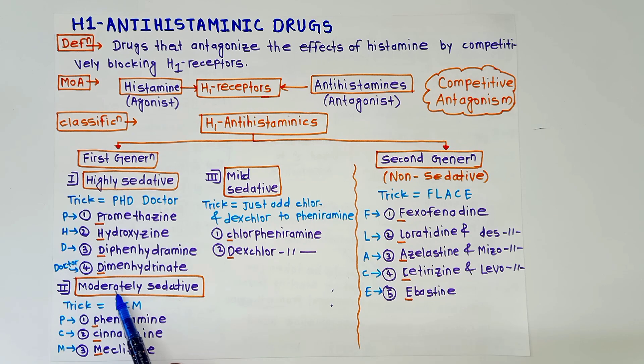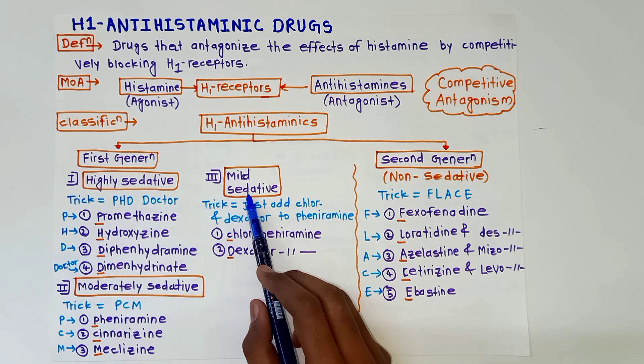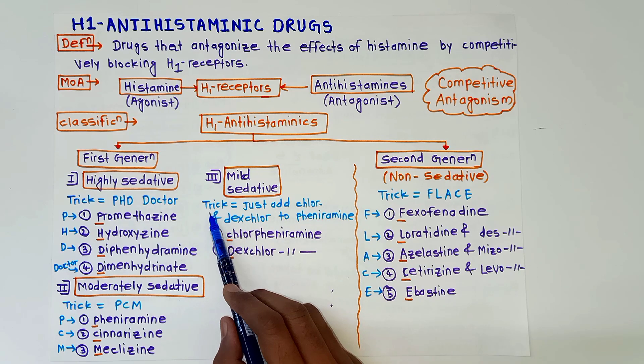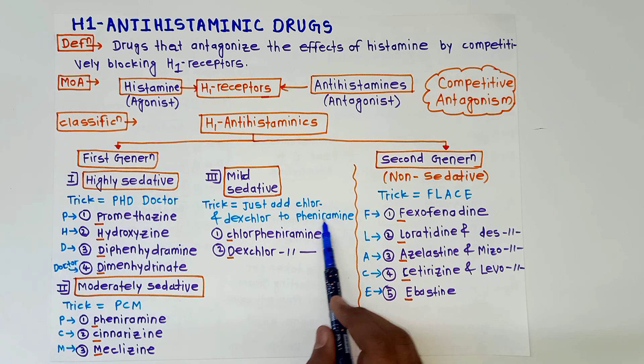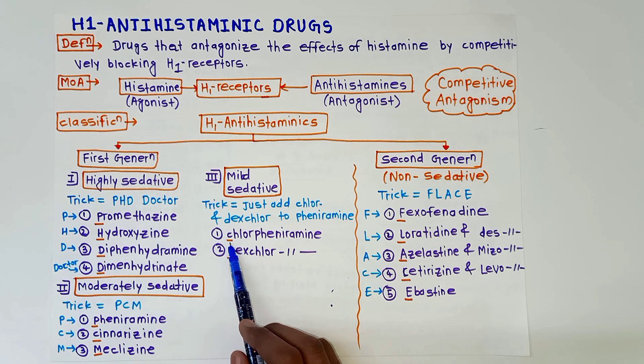Now moderately sedative. Trick to remember this is PCM: P for pheniramine, C for cinnarizine, and M for meclizine. Then mildly sedative. Trick to remember this is just add chlor and dexchlor to pheniramine, so the drugs are chlorpheniramine and dexchlorpheniramine.